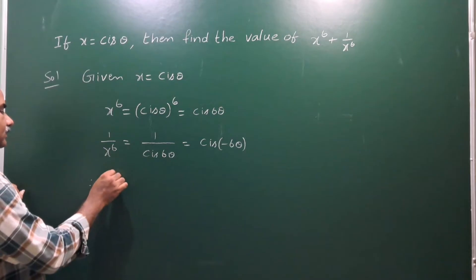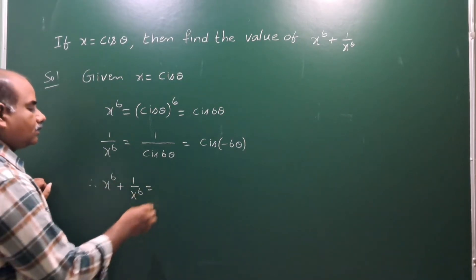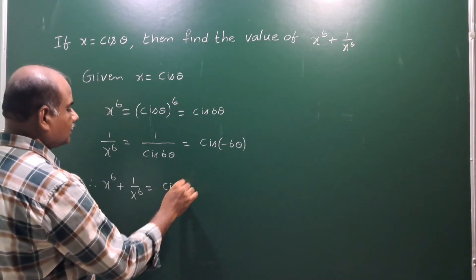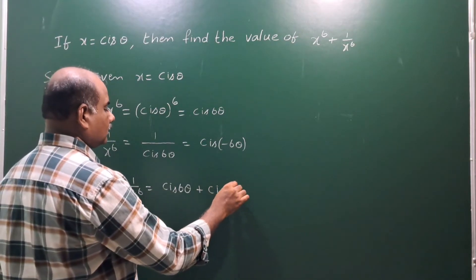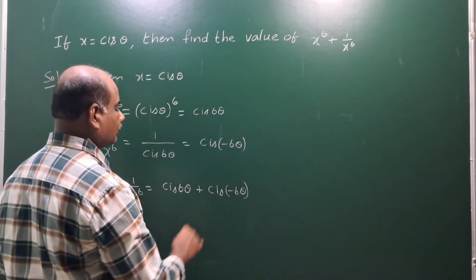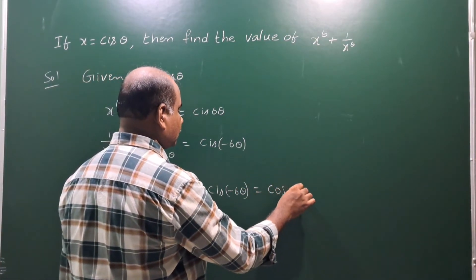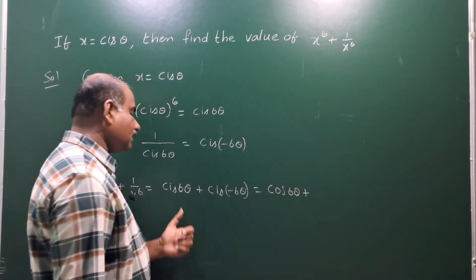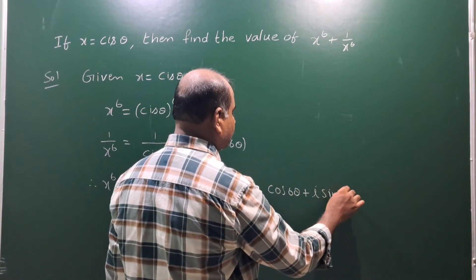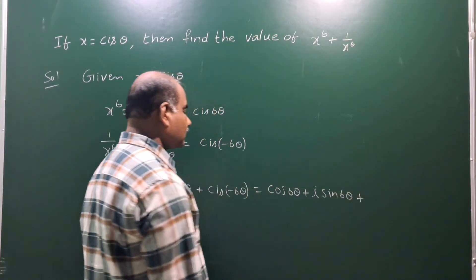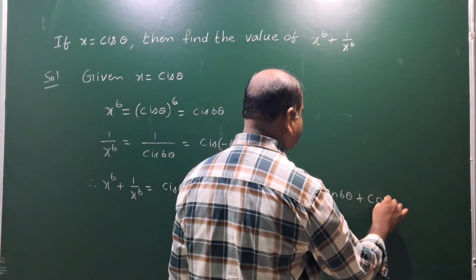Now, x power 6 plus 1 by x power 6 is equal to cis 6 theta plus cis minus 6 theta. And this can be written as cos 6 theta plus i sine 6 theta plus cos 6 theta minus i sine 6 theta.